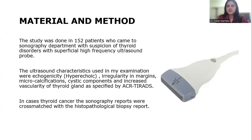Material and Method. The study was done in 152 patients who came to the sonography department with suspicion of thyroid disorders, using a superficial high-frequency ultrasound probe. The ultrasound characteristics used in the exam were echogenicity — that is hyperechoic — irregularity in margins, microcalcifications, cystic components, and increased vascularity of the thyroid gland, as specified by ACR TIRADS. In cases of thyroid cancer, the sonography reports were cross-matched with the histopathological biopsy report.